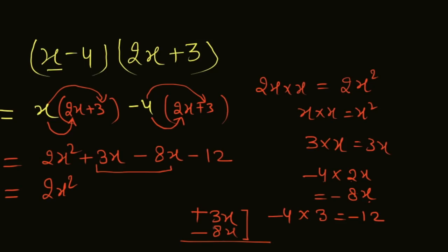When opposite signs occur, we subtract. 5x will result, and minus will apply. The greater number's sign is what we use. So minus 5x and minus 12. This is the answer of this question.